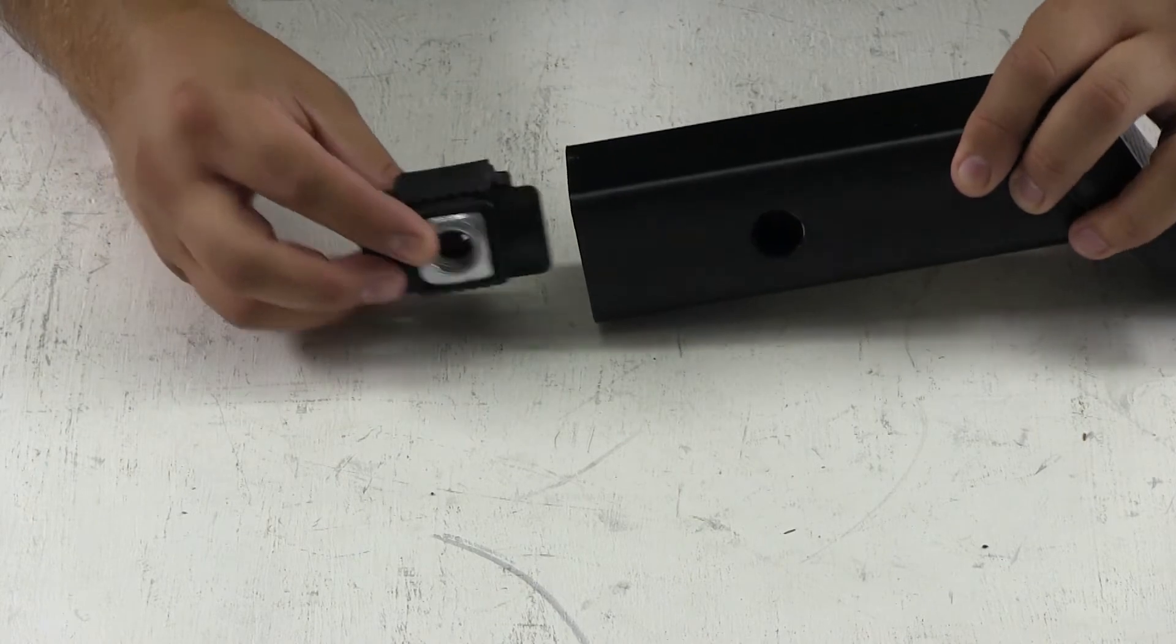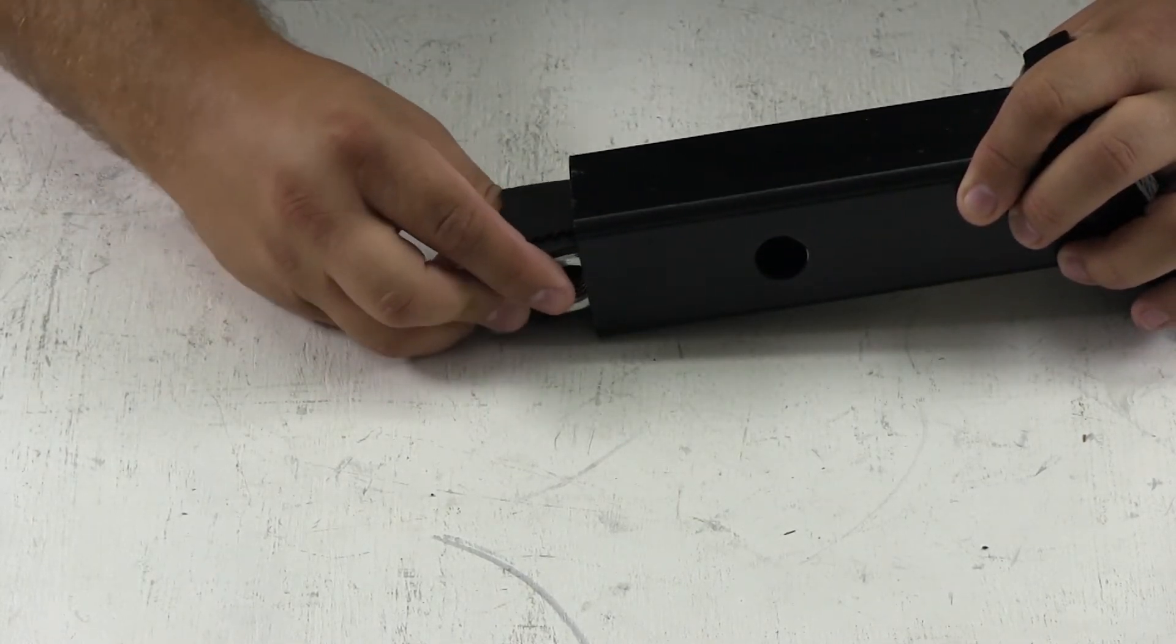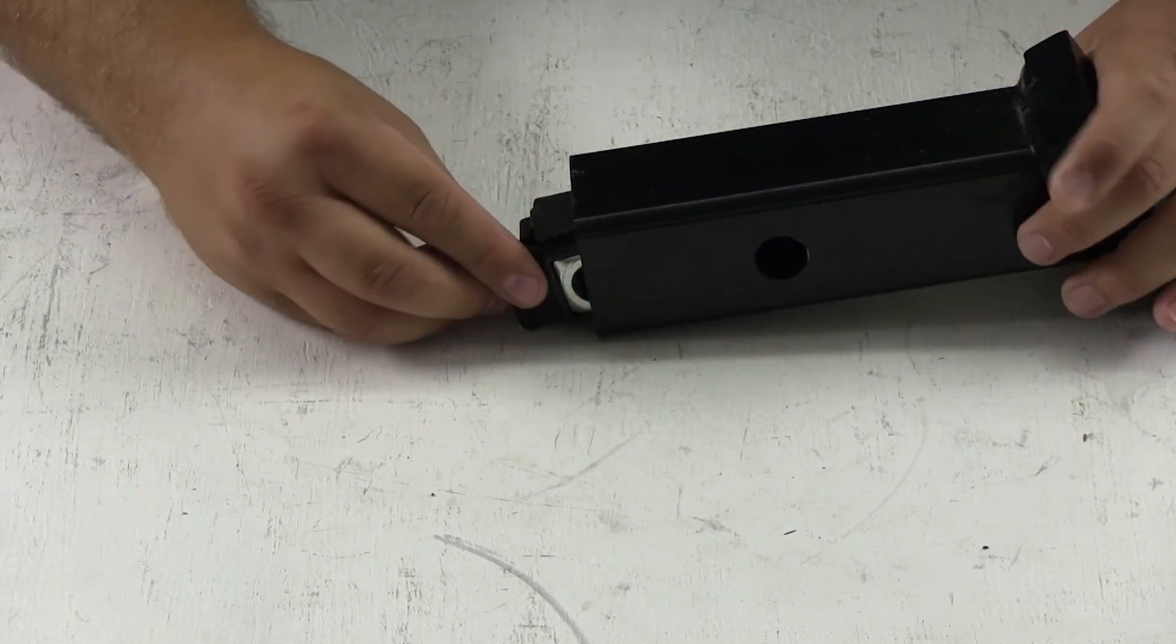We'll take our ball mount, fit the sleeve with the nut inside, and line it up with a hitch pin hole on our ball mount.